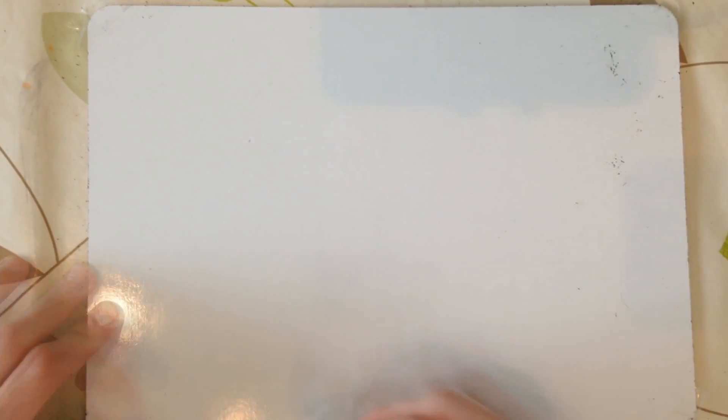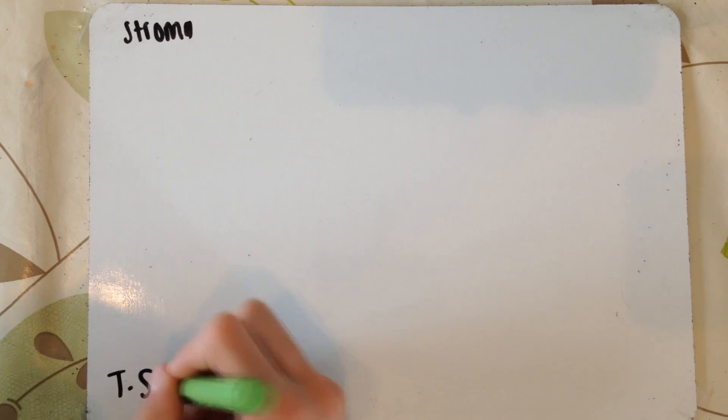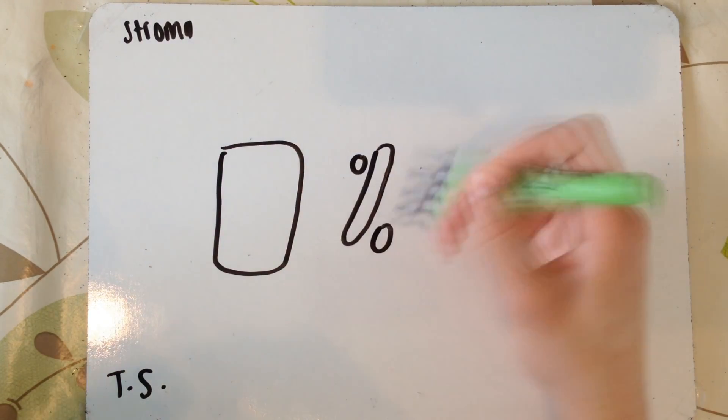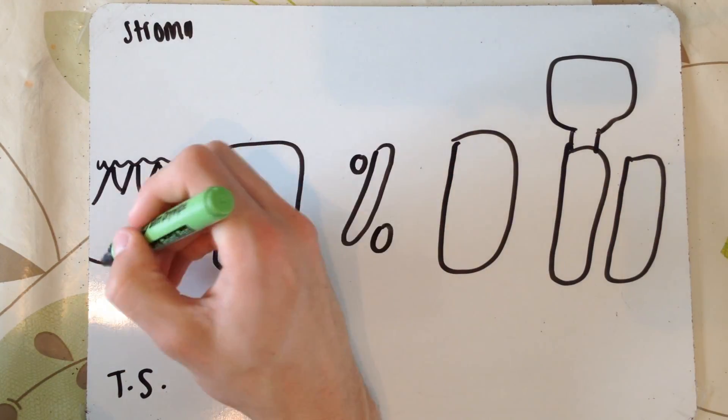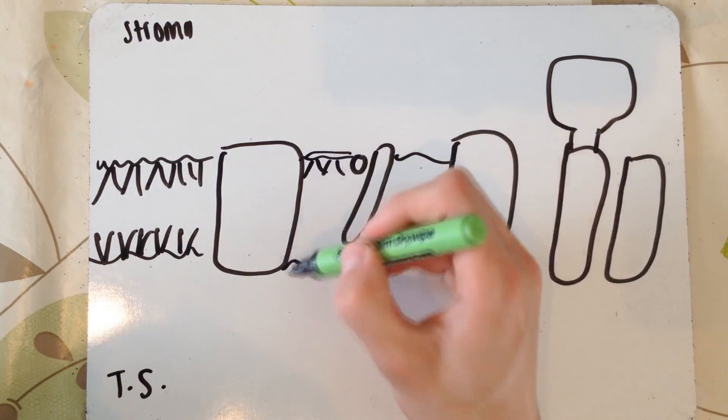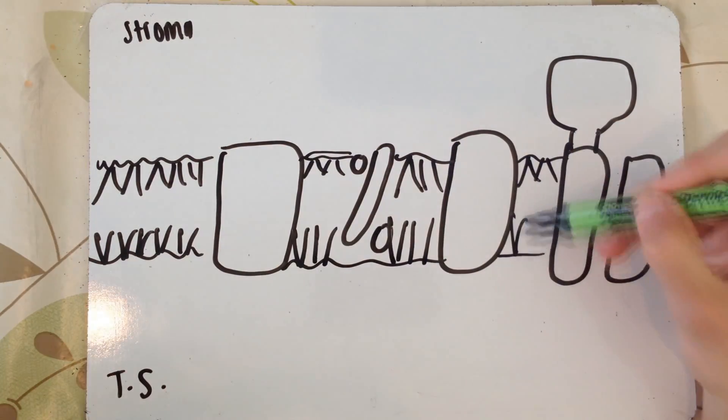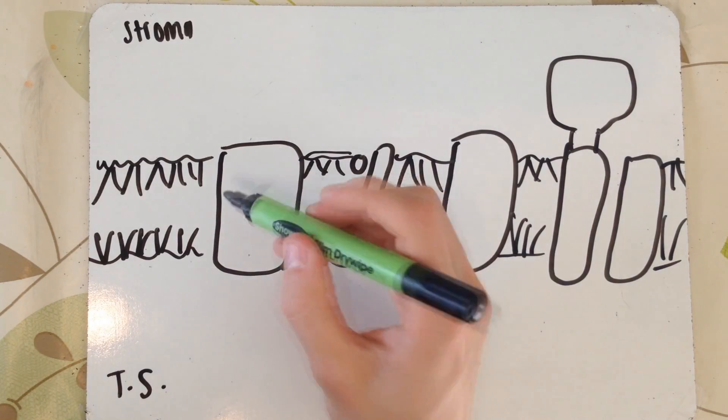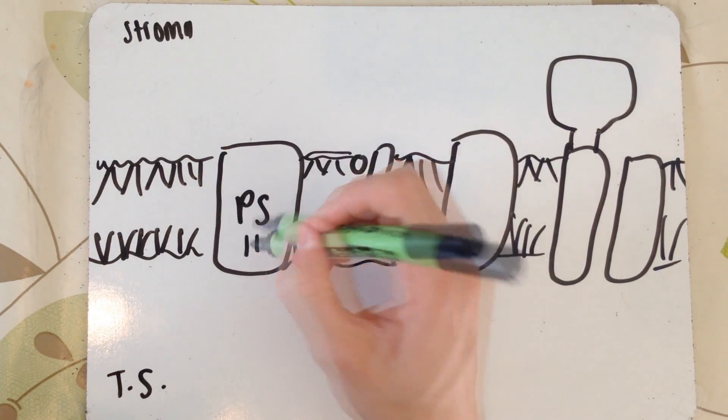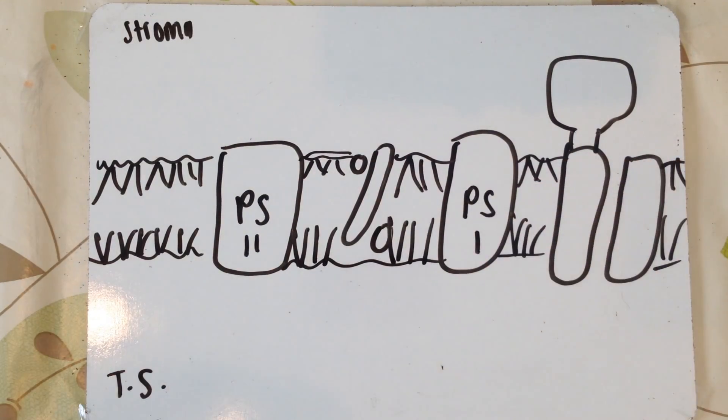What I'm drawing right now is a thylakoid membrane. We've got the stroma up the top and the thylakoid space at the bottom. All these squiggly lines are obviously your basic phospholipids that make up the bilayer membrane. PS2, photosystem 2, is our photosystem on the left, and photosystem 1 is our one on the right. In the middle there, those squiggly things are our electron carriers, our electron transport proteins.